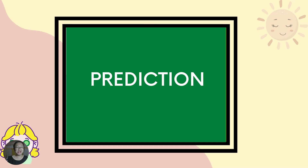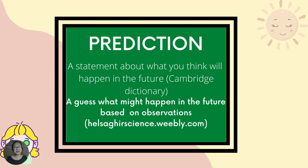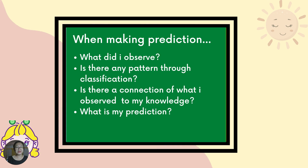Let's talk about prediction. Prediction is a statement about what you think will happen in the future. It is a guess about what might happen in the future based on observations.